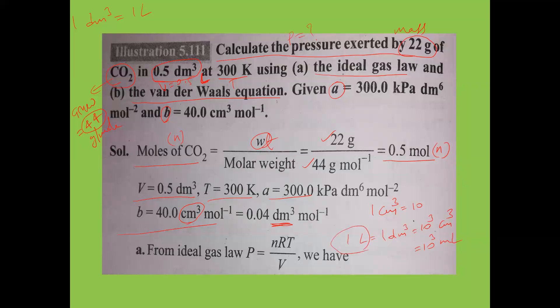Comparing the results: pressure from ideal gas equation (~2.4–2.5 × 10³ kPa) is somewhat greater than pressure from Van der Waals equation (~2.3 × 10³ kPa). In ideal gases, attractive forces are negligible, but in real gases, attractive forces reduce the pressure exerted. Therefore, P_ideal > P_real.